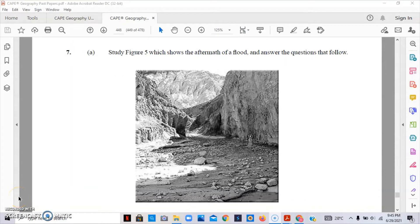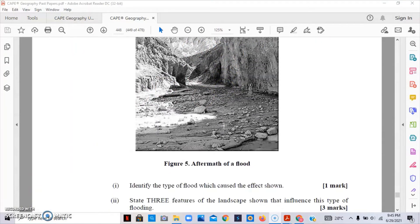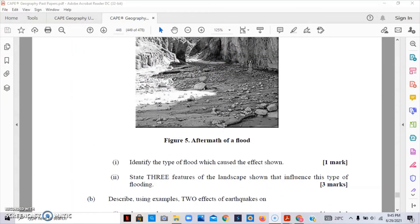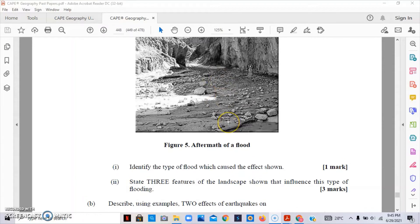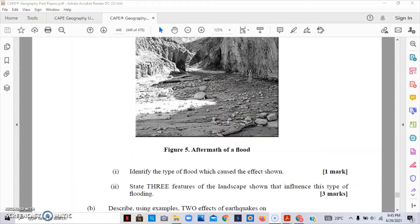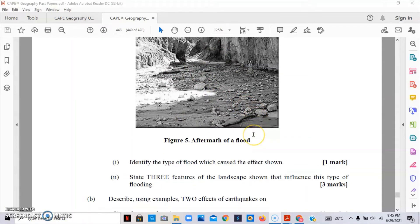Question 7 shows the aftermath of a flood. Part one asks us to identify the type of flood which caused the effect shown. A lot of students' answer for this question was ravine flooding, but this is not ravine flooding. This is a flash flood. Remember that a flash flood is basically a local flood that has a great amount of water and a very short duration. This area was covered under water but it lasts for a very short time.